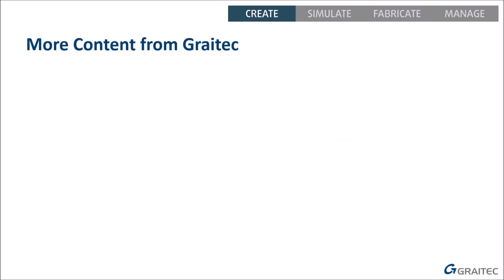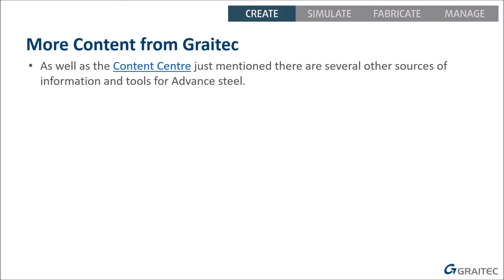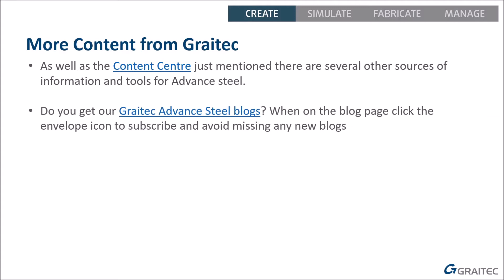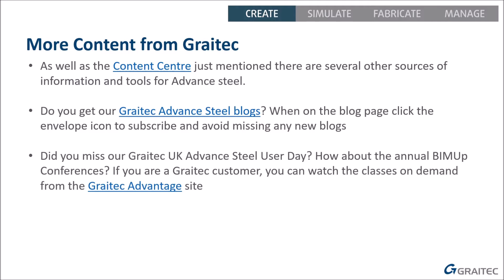We also do a lot more content than just webinars — there's over 50 hours of training on the Content Centre for Advanced Steel plus lots of other material. We do blogs, and there are over 100 blogs on the Greytech UK site, many of which are tips and tricks for using Advanced Steel. If you're a Greytech UK customer, you also have access to Greytech Advantage, where you can watch previous presentations from BIMUP conferences — over 200 classes each year — as well as user day recordings.